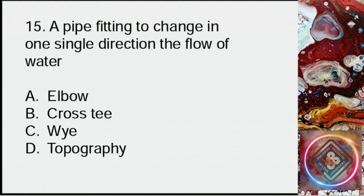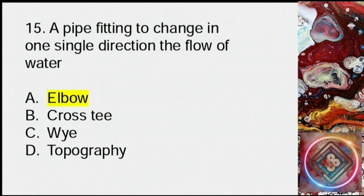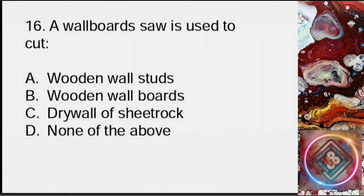Question 15: A pipe fitting to change in one single direction the flow of water. A: Elbow, B: Cross tee, C: Wye, D: Topography. Answer: A, elbow.